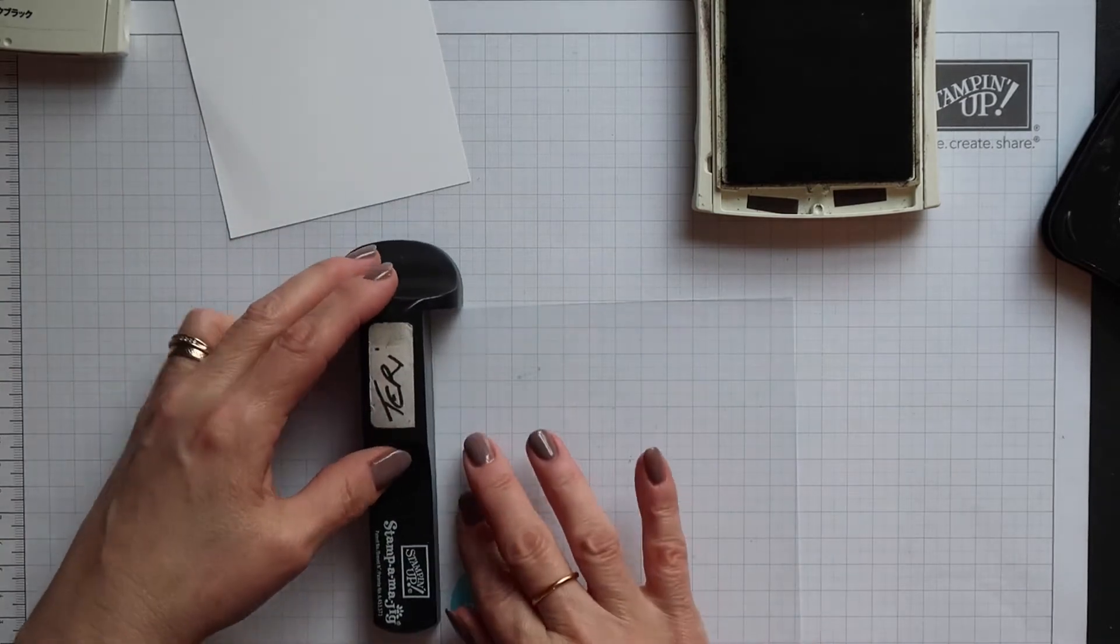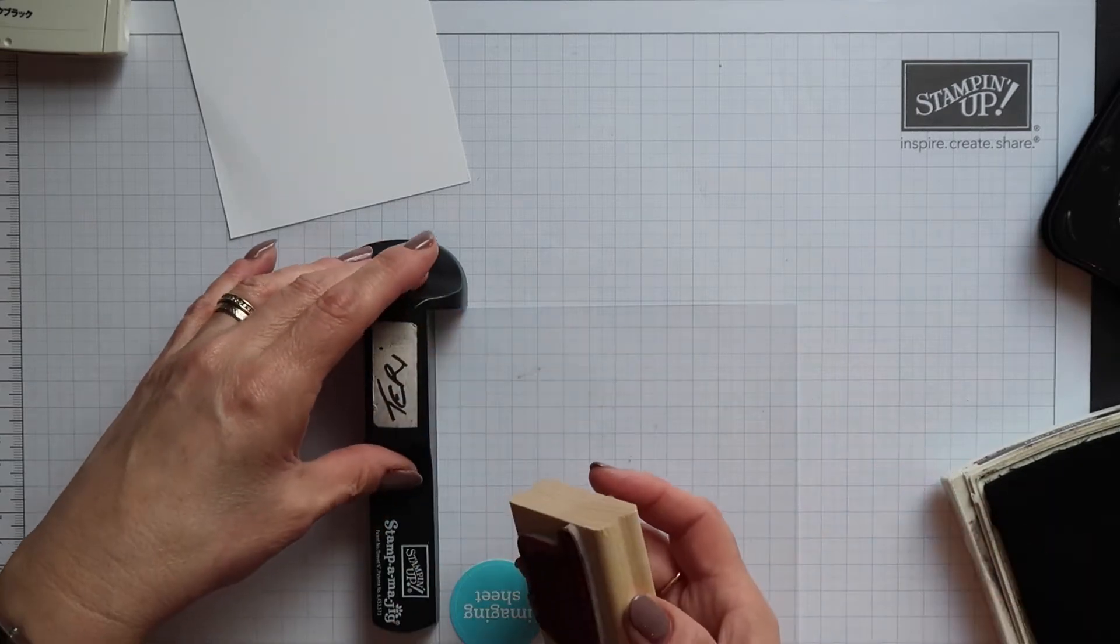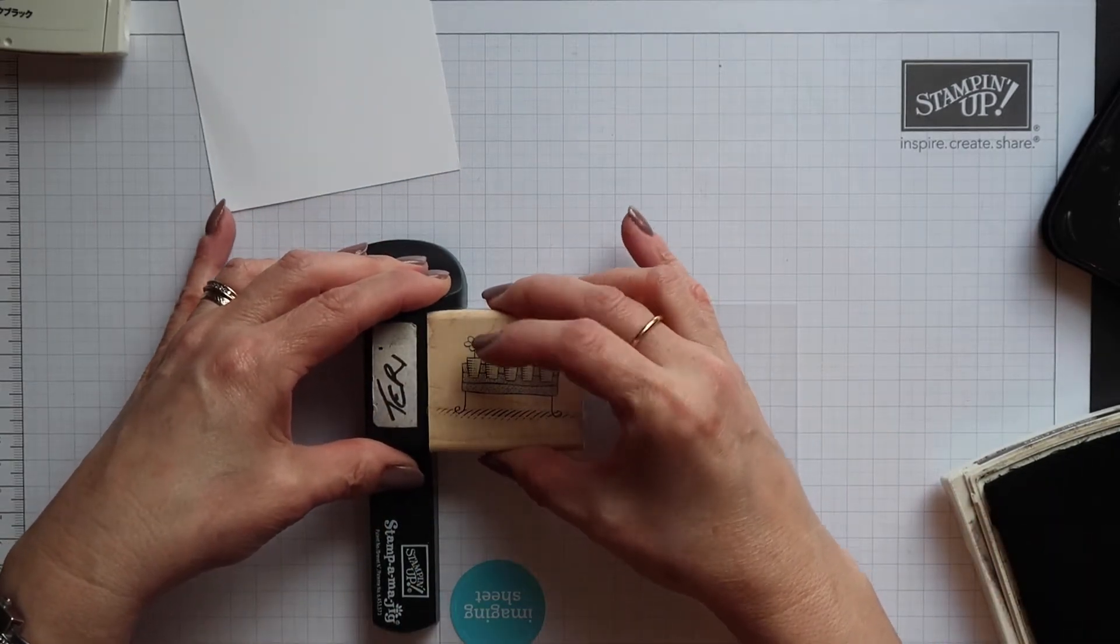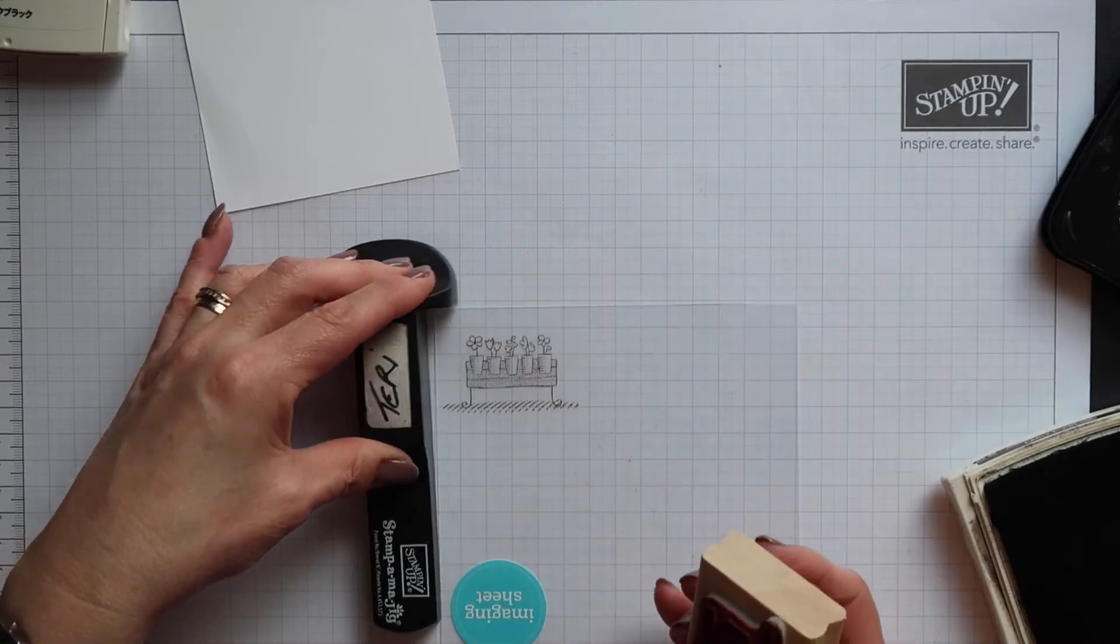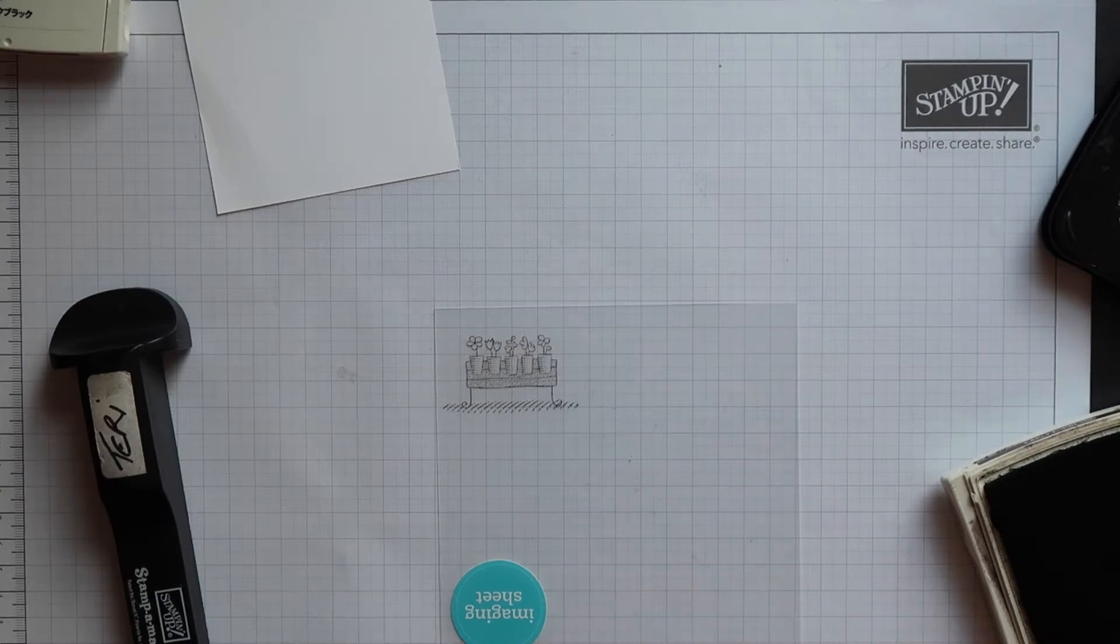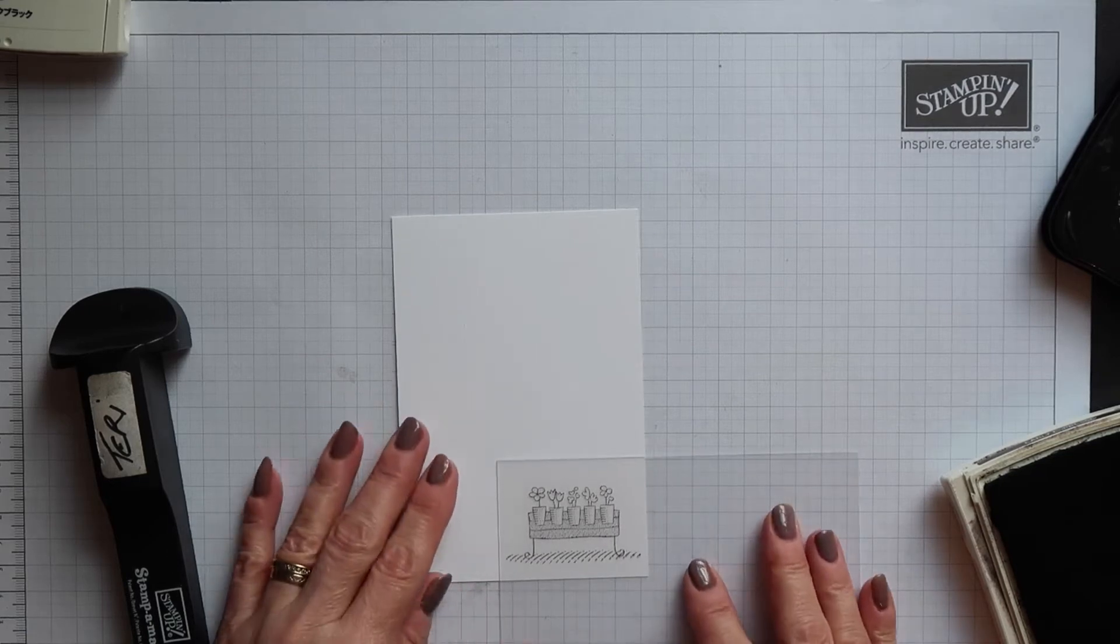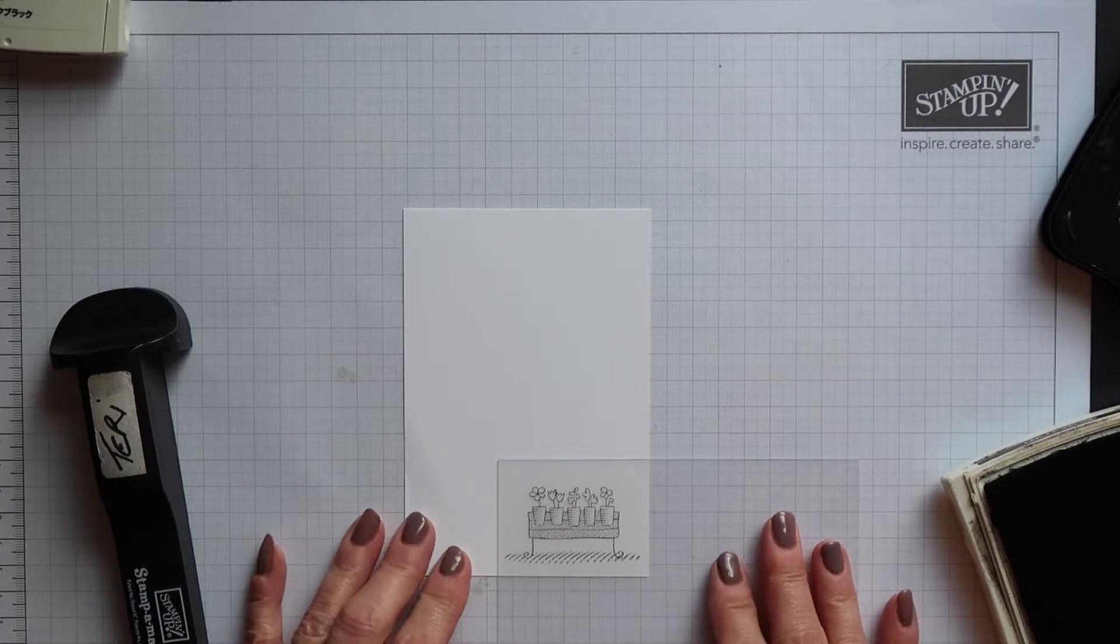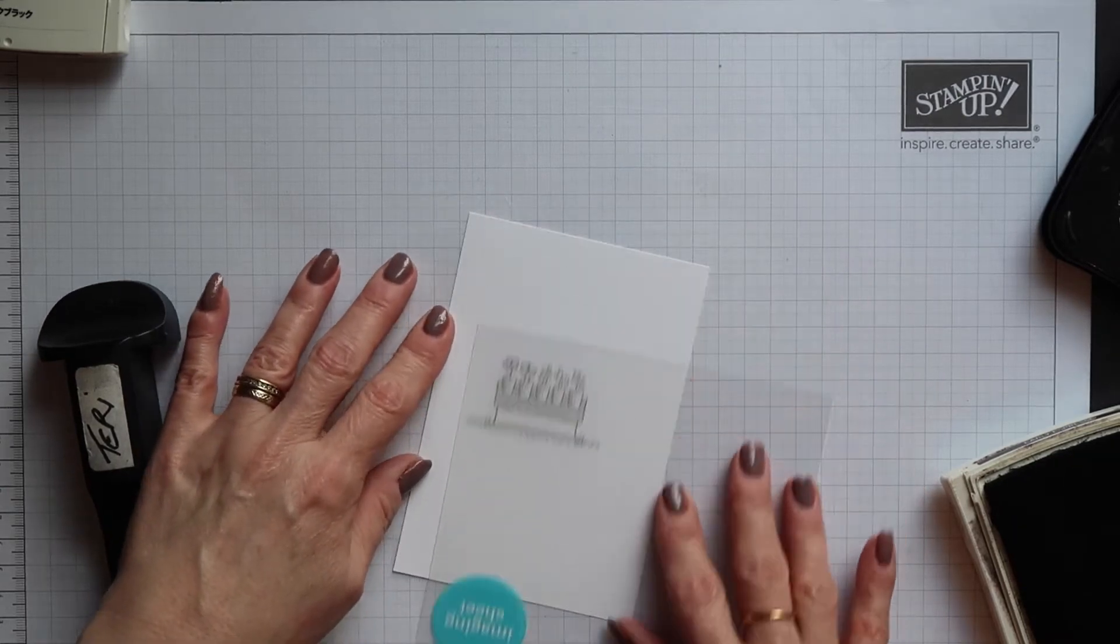Now I'm going to stay with dye based inks but I'm going to use Early Espresso which is much darker. So again I've positioned my stamp and then I'm going to slide it down the handle and onto that imaging sheet and this time you can clearly see the image there. So it makes it very easy to position the image onto your card and stamp it wherever you want that image to be.